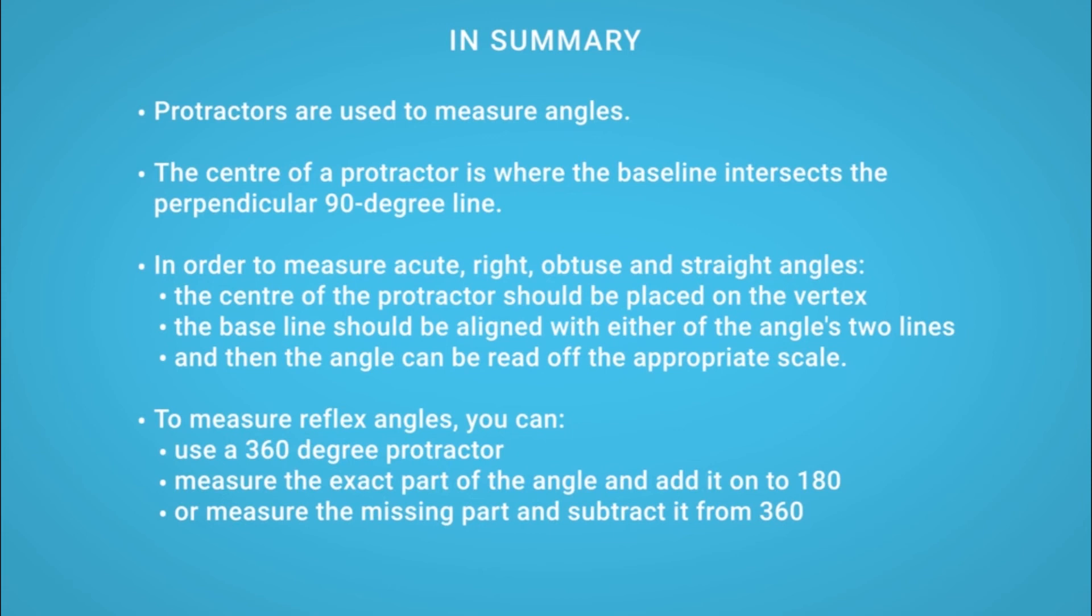In order to measure acute, right, obtuse and straight angles, the centre of the protractor should be placed on the vertex. The baseline should be aligned with either of the angle's two lines, and then the angle can be read off the appropriate scale.